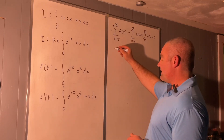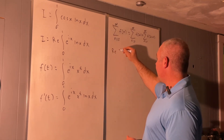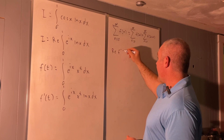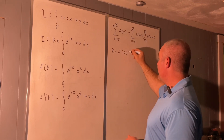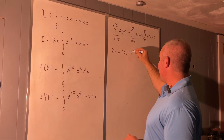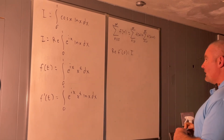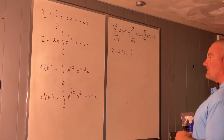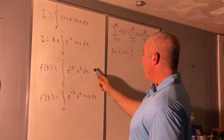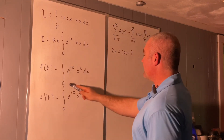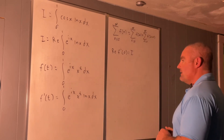Now we see that if we take the real part of f prime evaluated at the point 0, we'll get back our original integral. So the next step is to use Taylor series to find a new way to write our original f of t.